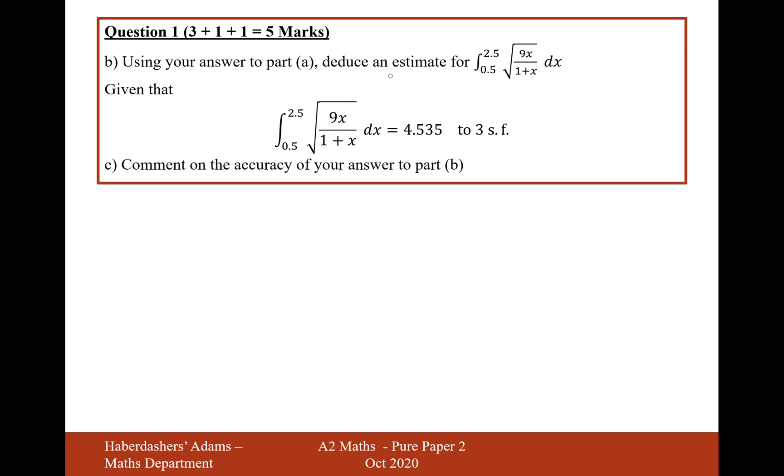Using your answer to part a, deduce an estimate for this integral here. Well, this integral here, from 0.5 up to 2.5 of the square root of 9x over 1 plus x dx, what we'll do is we'll factorise out the square root of 9, the square root of 9 is 3, so it's going to be three lots of the integral from 2.5 down to 0.5 of the square root of x over 1 plus x dx. So therefore it's going to be three times the value to the previous integral, and that's going to be 4.50. Good.